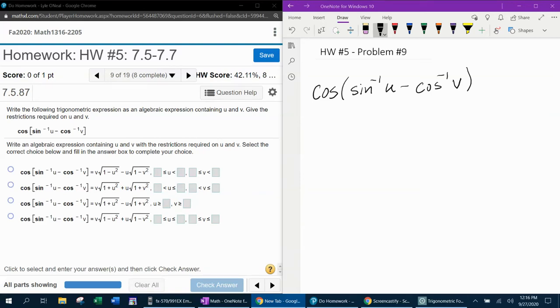All right, here we go. Problem number nine from our 1316 homework number five in my lab math. It says to write the following trigonometric expression as an algebraic expression containing U and V, and then give the restrictions on U and V.